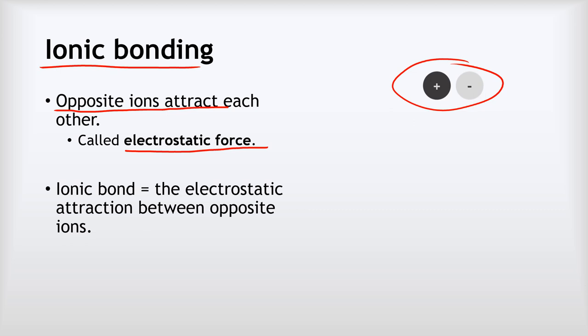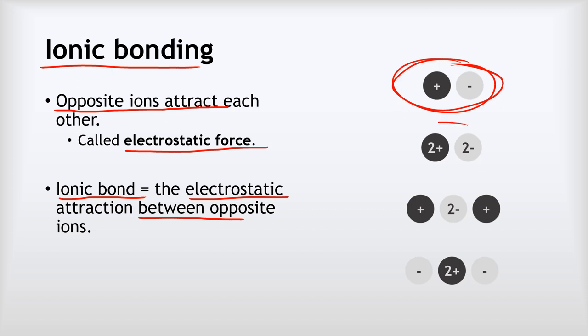That leads to the idea of the ionic bond. The ionic bond is just the electrostatic attraction between those opposite ions. This here is an example of an ionic bond, but it won't always just be a single positive and negative ion. We might have a 2+ and a 2- ion attracted to each other, or a 2- ion attracted to two singly positive ions, or a 2+ ion attracted to two singly negative ions. The key thing to take from this is that an ionic bond is the electrostatic attraction between opposite ions.